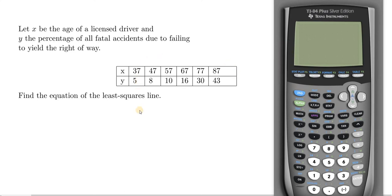Hi everyone, in this video we're going to find the equation of the least squares line using the TI-84 calculator. So you have a problem here where x is the age of a licensed driver and y is the percentage of all fatal accidents due to failing to yield the right of way. So we have the ages 37, 47, 57, etc. And then here we have the percentages of fatal accidents.